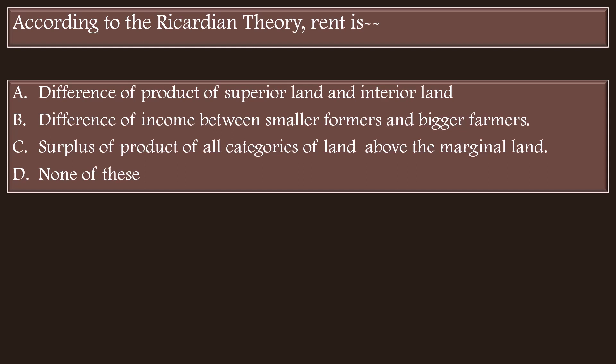D - None of these. While answering this question, one is tempted to choose option A because we know pretty well that rent is earned by superior land over inferior land. This is what option A says. It is correct.